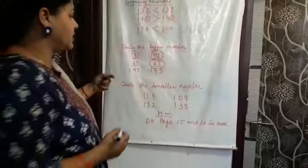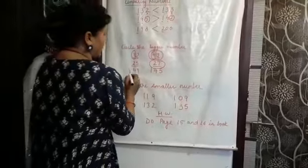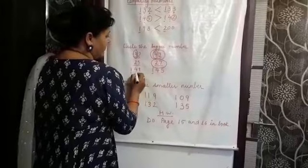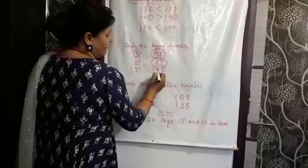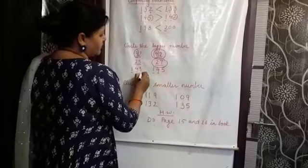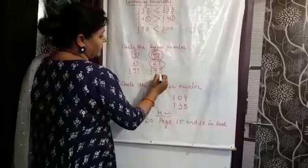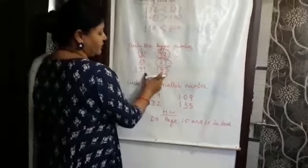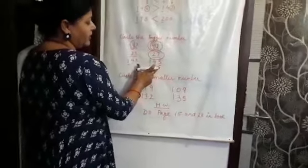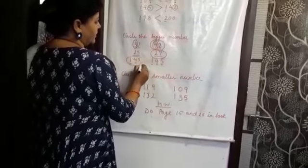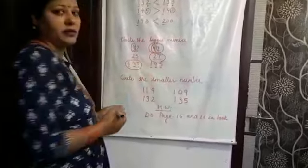Now see the next number. Here we have 1 — both are the same. Here we have 4 — both are the same. So we will see the number at the ones place. Between 9 and 5, which number is bigger? 9. So we will circle this number.